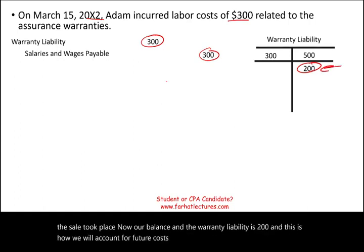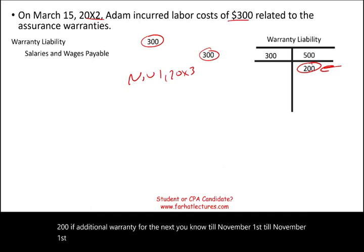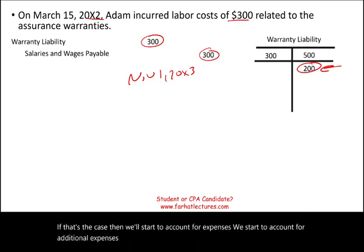We will continue to account for future warranty costs this way, hopefully not exceeding the remaining $200 balance before the warranty expires on November 1st, year X3. If costs exceed the liability balance, we would then record additional warranty expense.